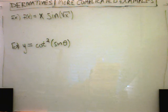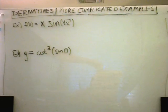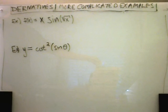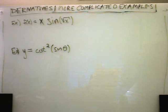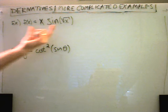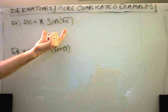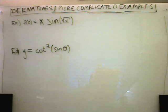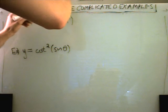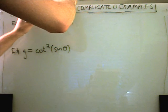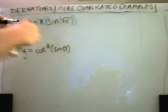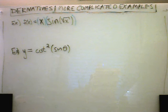In these examples I want to do some more derivatives, but slightly more complicated ones. We're going to combine basically all the rules we've seen. Let's start with the first one: x times sine of square root of x. When I look at this I see two things — the x term factor and the sine of square root of x — so two things being multiplied, which tells me I have to use the product rule.